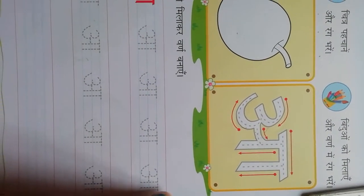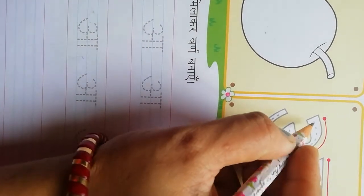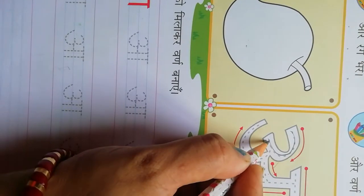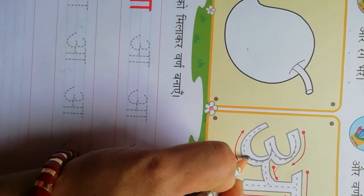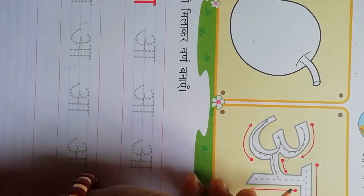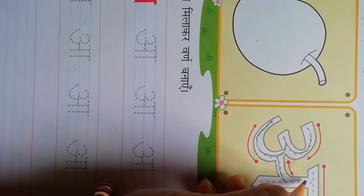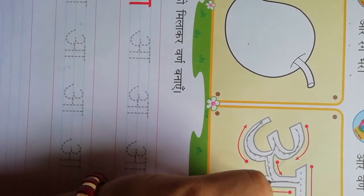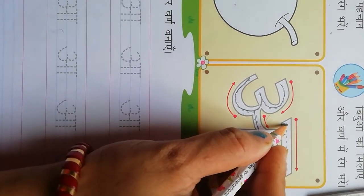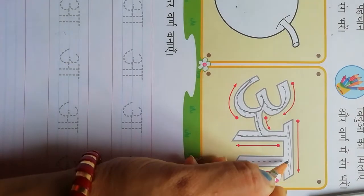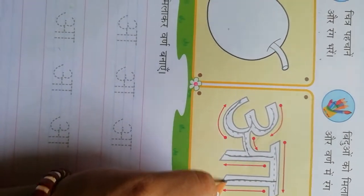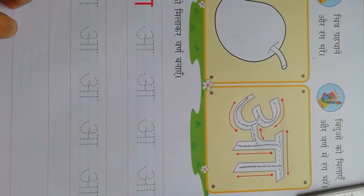Now how to trace aah. Left open curve. Again, left open curve. Then small curve. Standing line. Sleeping line. Again, standing line. Make aah.